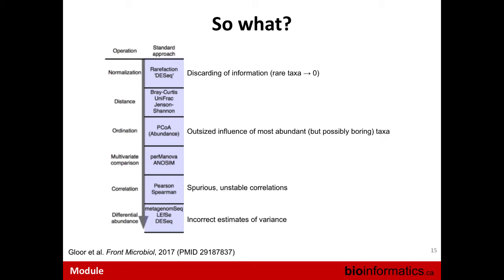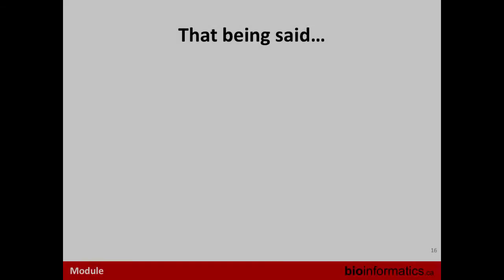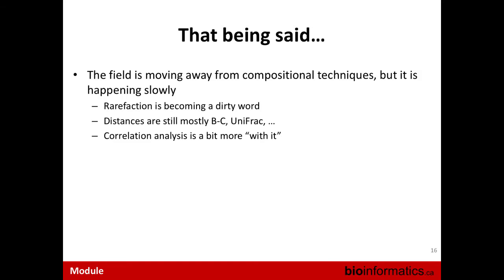PCoA might bury important signals in your fifth or sixth component with an eigenvalue of who cares. Multivariate comparisons include ANOVA, ANOSIM, and PERMANOVA. Correlations include Pearson and Spearman. And then there are differential abundance methods — do I have different amounts of this over here and that over there? Rarefaction is the longest four-letter word in metagenomics — don't do it. Distances: there are a couple of compositionally aware distance methods, but most people still use Bray-Curtis and weighted/unweighted UniFrac.